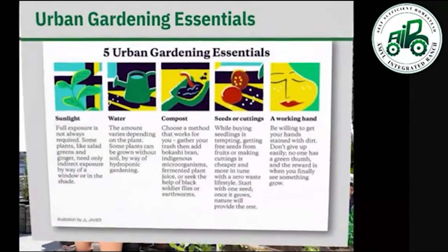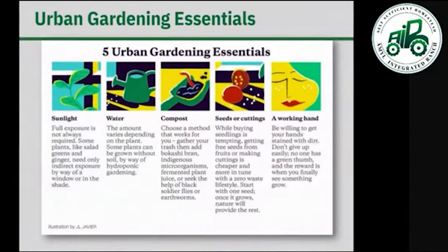Urban gardening essentials: First is sunlight — full exposure is not always required because some plants like salad greens including ginger need only indirect exposure through a window or in the shade. For water, the amount varies depending on the plant. For compost, choose a method that works for you — gather your trash and add bokashi bran, indigenous microorganism, fermented plant juice, or seek the help of black soldier flies.